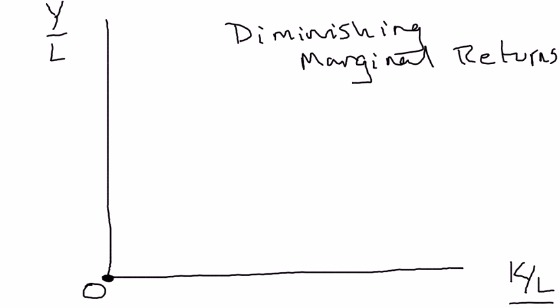Let's try to use that basic intuition to derive what the aggregate production function is going to look like. Here you are at zero shovels, and then you add a shovel, so the capital-labor ratio increases to KL1, and you get a big jump in output. Labor productivity rose all the way up to here.